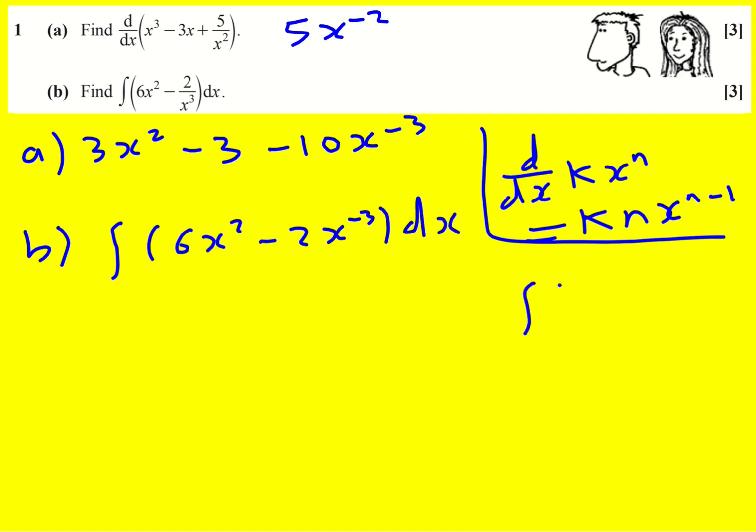If you integrate k x to the n dx, then this time you add one to the power, so you get x to the n plus one, and you divide by the new power. I'm going to write it as k over n plus one. However, we also need a plus c where c is an arbitrary constant.